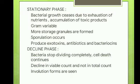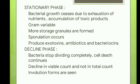Next, moving on to decline phase. Gradually, the bacteria stop dividing completely while cell death continues due to exhaustion of nutrients and accumulation of toxic products. So there is a decline in viable count and not in the total count. Involution forms of bacteria are formed as a result of unfavorable conditions — they are irregular bacteria.